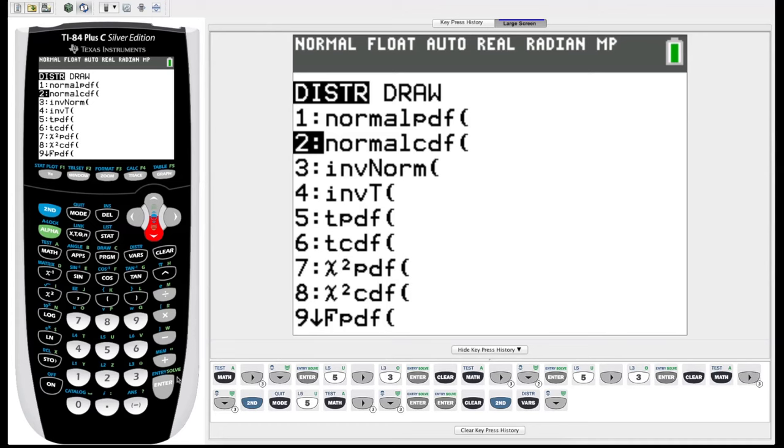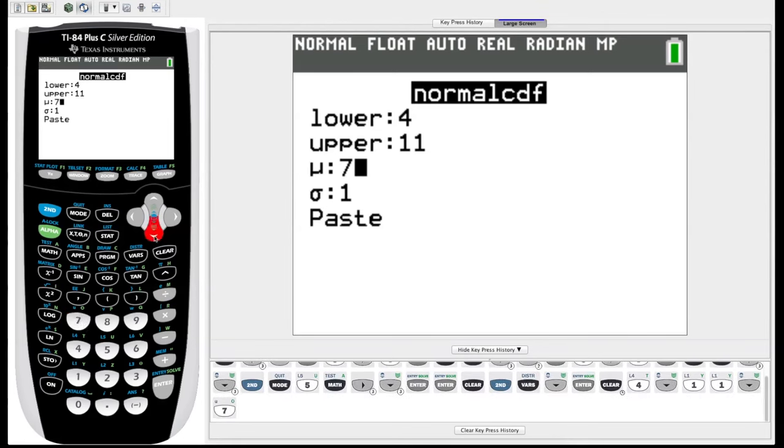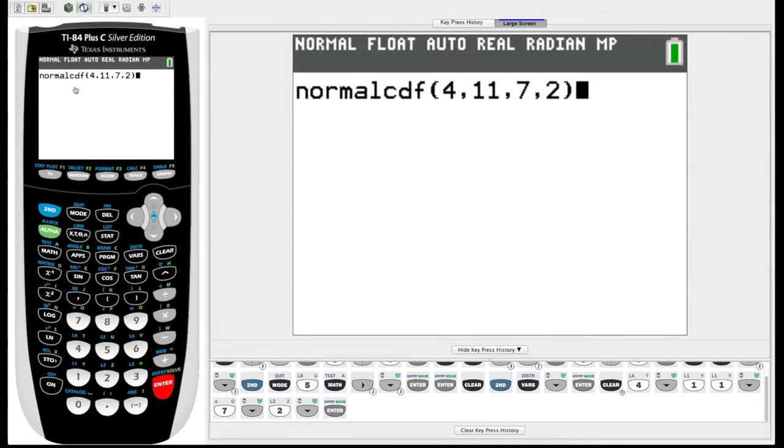We hit enter and it asks for four inputs: lower, upper, mu for mean, and sigma for standard deviation. Let's say I have a data set and I'm interested in the probability that it falls between the values of four and eleven. We hit four, arrow down, hit eleven, arrow down to mean. Let's say the data has a mean of seven, arrow down, and a standard deviation of two. Then we hit the paste button, arrow down, hit enter, and it brings us back to the home screen. We enter again and it gives us a decimal value which represents the probability, so 91% probability that our value would lie between four and seven.